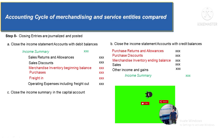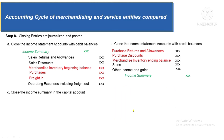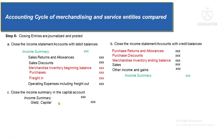The third closing entry closes the income summary account. If the income summary credit postings are greater than debit postings, that means the account has a credit balance, so we debit it with a corresponding credit to the capital account to close it. If debit postings are greater, the entry is reversed. That's it for the third closing entry.